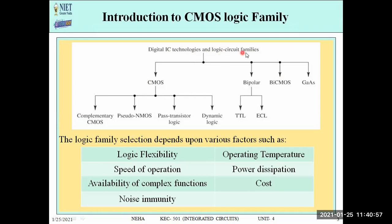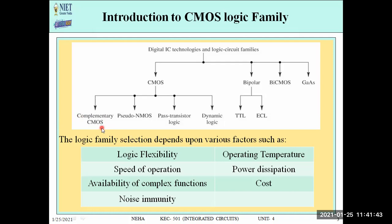The digital IC technologies and logic circuit families include CMOS, Bipolar, BiCMOS, and GaAs. Under Bipolar we have TTL and ECL gates. Within CMOS technology, the main types are complementary CMOS, pseudo-NMOS, pass transistor logic, and dynamic logic. For this unit we will focus only on complementary CMOS and designing logic circuits using it.